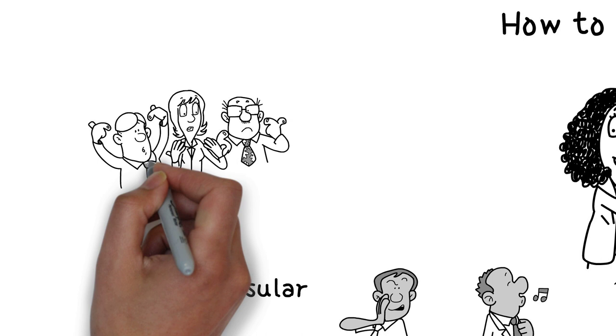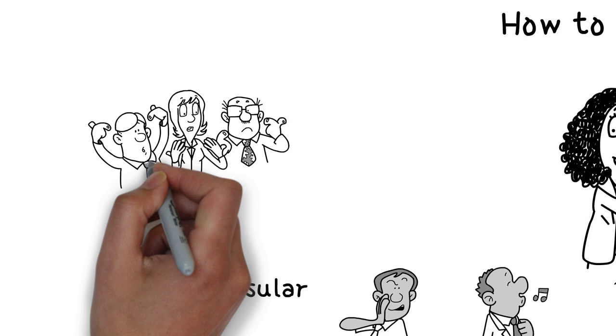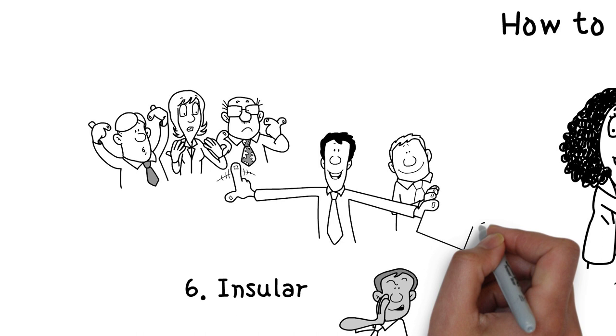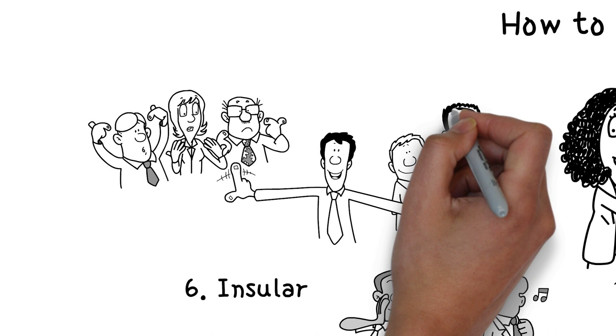An insular leader discriminates between people in a negative way. They have in-groups and out-groups, people who they favour more than others. These sorts of leaders do not share power with equality and will strive to maintain their power dynamic by pushing others down.